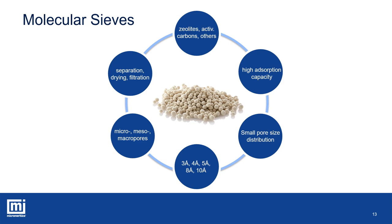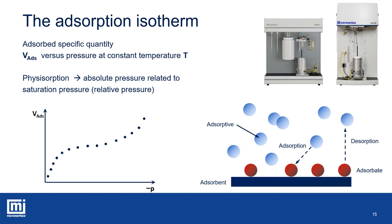Gas adsorption is the technique to characterize adsorbents. In general, it is the most widely used technique to measure the exposed surface area of a solid material and to get information about pore sizes in the micro and mesoporous ranges. Adsorption describes the adhesion of atoms, molecules, or ions from a fluid phase onto a surface called the adsorbent. The film built on the surface is then called the adsorbate. Physical adsorption, also referred to as physisorption, is caused by weak interactions such as van der Waals forces. During adsorption experiments, the amount of gas adsorbed is determined and plotted versus the equilibrium pressure, and experiments are performed under isothermal conditions.